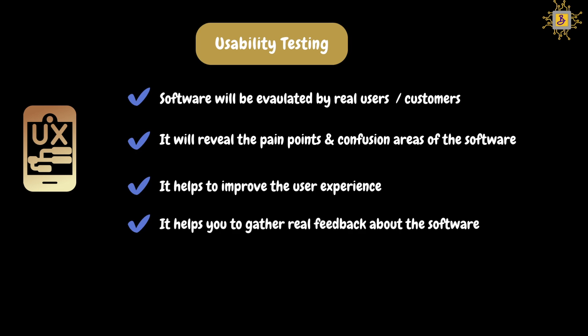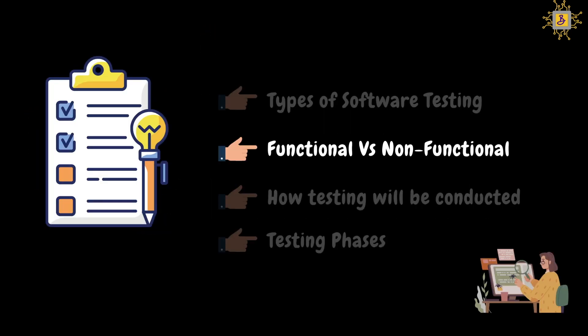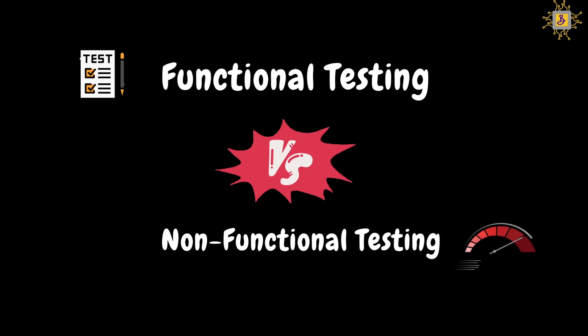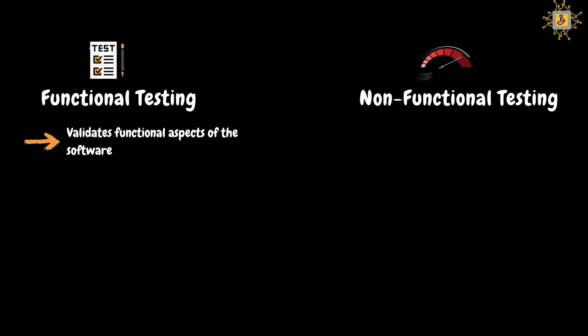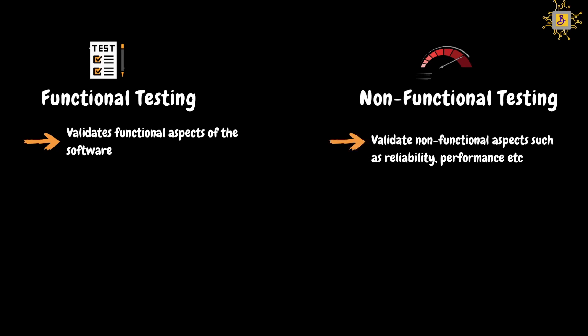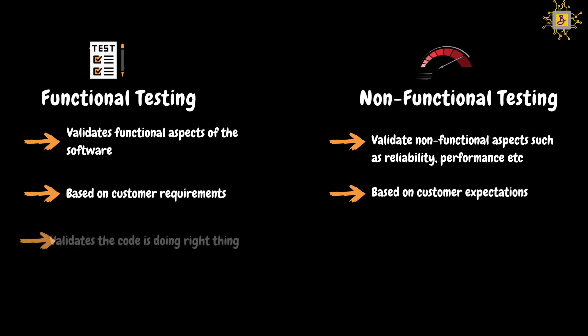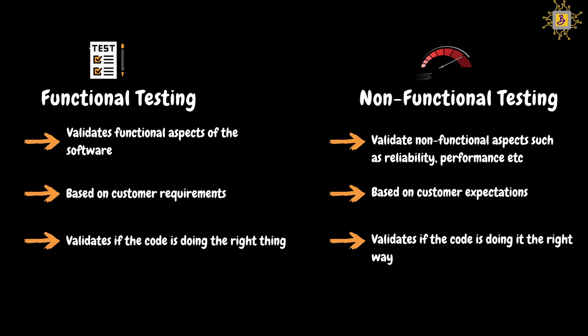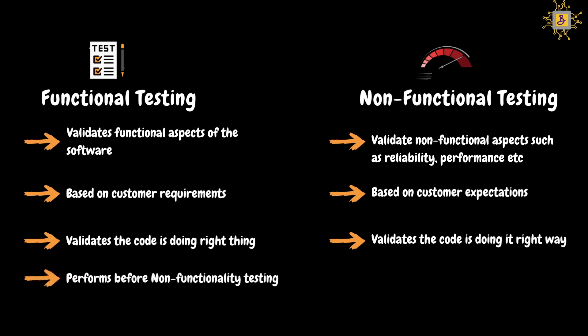I hope you understand different types of non-functional testing. Now let's quickly look at the differences between functional and non-functional testing. Functional testing will primarily focus on the functional aspect of the application, whereas non-functional testing primarily focuses on non-functional aspects such as reliability, performance, usability, compatibility, etc. Functional testing will be evaluated based on customer requirements, however non-functional testing will be evaluated based on customer expectations. Functional testing validates if the code is doing the right thing, whereas non-functional validates if the code is doing things the right way. In general, functional testing will be performed before non-functional testing. In order to assess non-functional aspects, functionalities need to be working as per customer requirements — if the functionality itself is not working, there is no point in validating non-functional aspects. So before starting any non-functional testing, the application should be functionally stable.